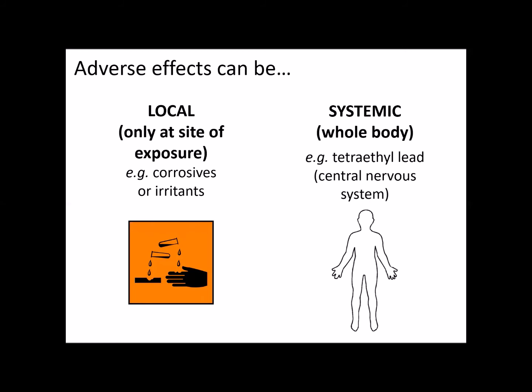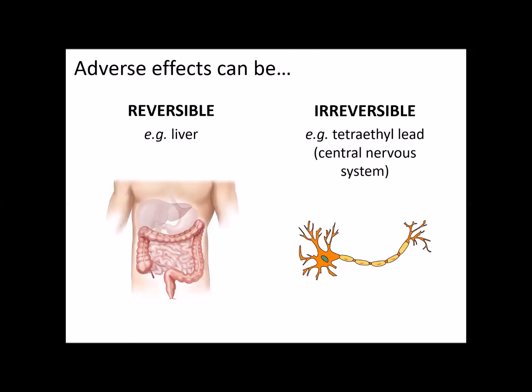Systemic, on the other hand, is something that affects the whole body. For example, tetraethyl lead used to be added to petrol as an anti-knocking agent. It would get into exhaust fumes, people would breathe it in, and it would affect the entire central nervous system — particularly in young children where the nervous system is developing. Another way of classifying adverse effects is reversible or irreversible. The liver, for example, is quite good at healing itself from damage caused by compounds like ethanol. But damage from tetraethyl lead to the central nervous system is irreversible — once done, it cannot be healed by the body.